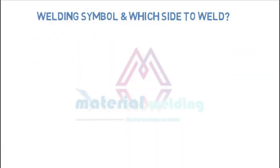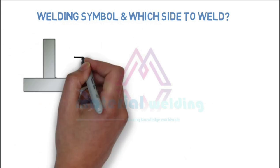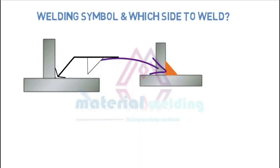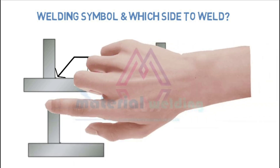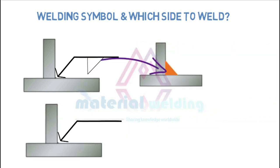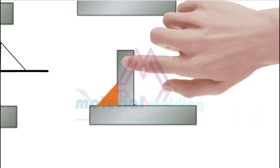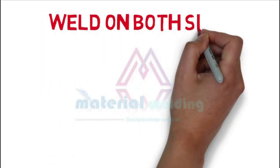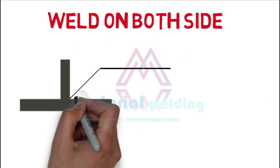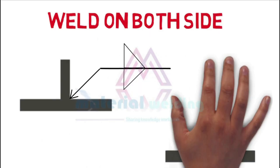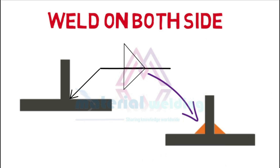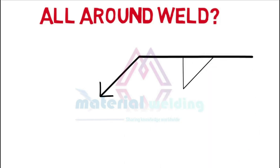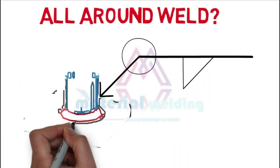Before learning the application of welding symbols, let's learn the importance of the arrow side and other side of the welding joint. When the weld symbol is placed below the reference line, the welding will be on the arrow side. When the weld symbol is placed above the reference line, the welding will be on the other side. When the weld symbol is placed on both sides of the reference line, it means welding shall be done on both sides of the joint. When an all-around symbol is given, welding has to be made all around the weld joint.